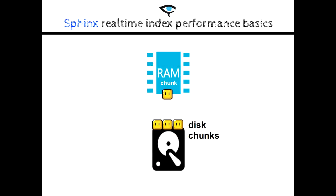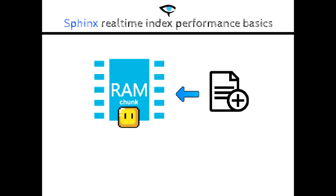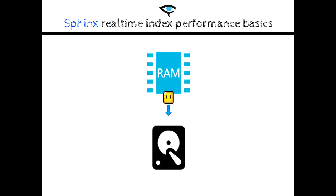A real-time index is split into two parts. One that always stays in memory, receiving new content, and a second that stays on disk, which is very similar to a plain index in structure. All new data goes to the RAM chunk. The size of this chunk is controlled by the RT-MEMLimit configuration option. When this limit is reached, the RAM chunk is flushed to a disk chunk, and the process repeats.